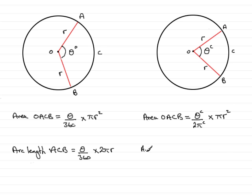Similarly, the arc length, I'm sure you've guessed what it's going to be by now, but the arc length ACB is going to be the angle θ radians over 2π radians times 2π r. So we have two formulas, two sets of formulas, one when we're working in degrees and the other when we're working in radians.